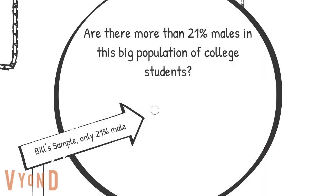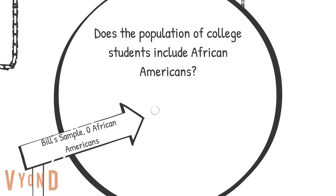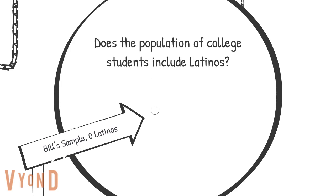Do you think that more than 21% of college students in the United States are male? If so, then Bill's sample does not adequately represent males compared to the population — indicating sampling bias towards females. And since Bill's sample doesn't include any African Americans or Latinos, we really can't say that his sample is representative of African American or Latino college students.